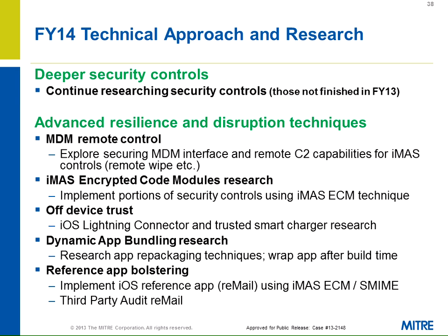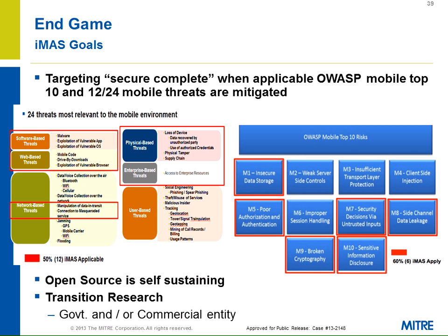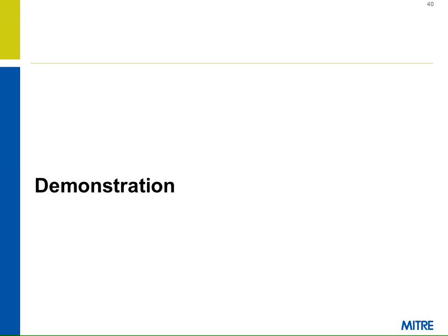Our end game is to get to the notion of 'secure complete' — where all applicable OWASP Mobile Top 10 items and 12 of the 24 mobile threats are mitigated to a satisfactory level, the open source site itself is self-sustaining with more folks contributing and doing pull requests, and we can transition this research to our sponsors, the government, or perhaps even a commercial entity.